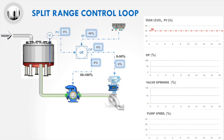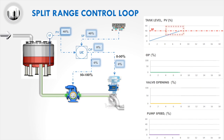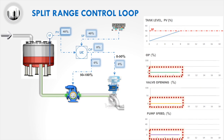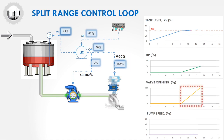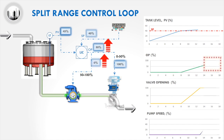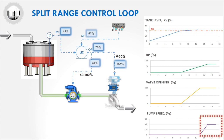We will now evaluate the actual behavior of the split range control when the tank level increases. When the level in the tank increases, the level transmitter's reading will increase. Since the tank level has yet to exceed the controller's set point, the controller's output will remain at 0%, and the valve opening and pump speed are also at 0%. When the tank level increases above the controller's set point, the controller's output will increase, and the valve opening will slowly increase to 100%. However, since the controller's output has yet to exceed 50%, the pump speed will stay at 0%. As the pump has yet to start, the tank level will not reduce back to the controller's set point, causing the controller's output to further increase. Once the controller's output value is above 50%, the pump speed will increase.